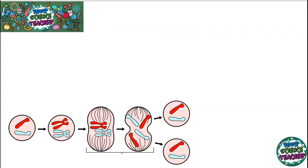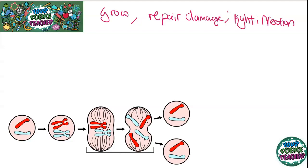In this video I'm going to go over the whole of B2 cell division. It starts by looking at why cells actually need to divide. If you're looking at a cell, we need to make replicas of itself in order to grow, repair damage, and fight infection. The process is called mitosis, where cells make exact replicas of the parent cells that they come from.